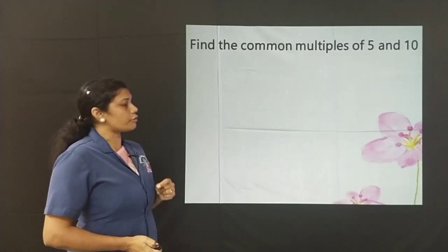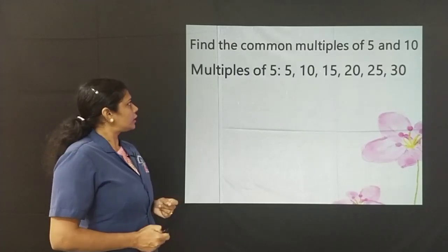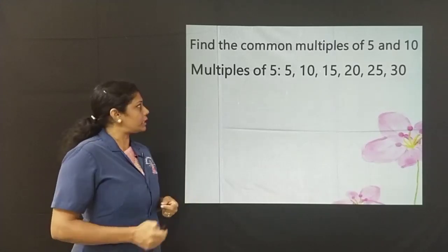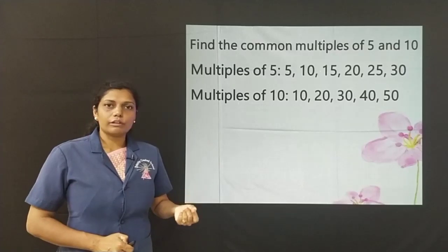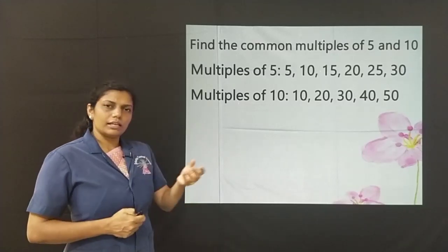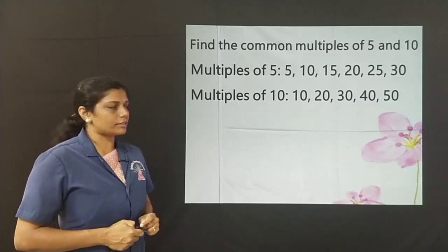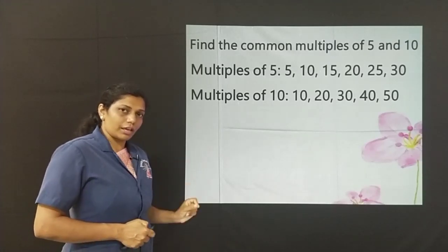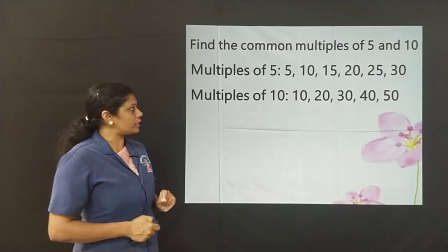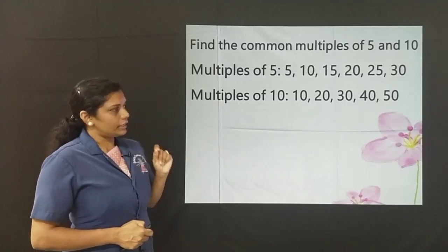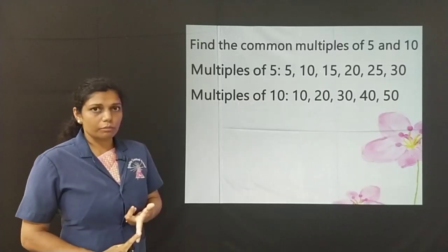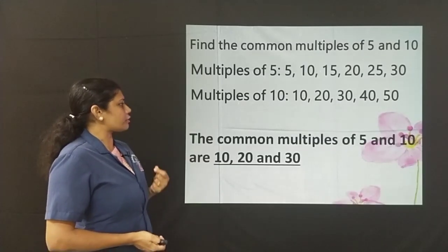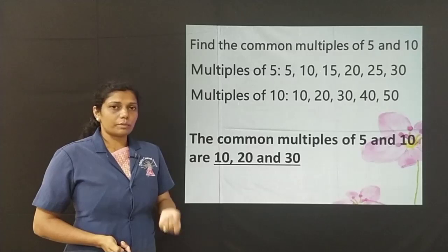Find the common multiples of 5 and 10. Multiples of 5: 5, 10, 15, 20, 25 and 30. The multiples of 10: 10, 20, 30, 40 and 50. I have written just a few multiples — it can continue endlessly. Now, what do you mean by common multiples? The multiples which are multiples of 5 as well as 10. Here, the common multiples are 10, 20, and 30. So, the common multiples of 5 and 10 are 10, 20 and 30.